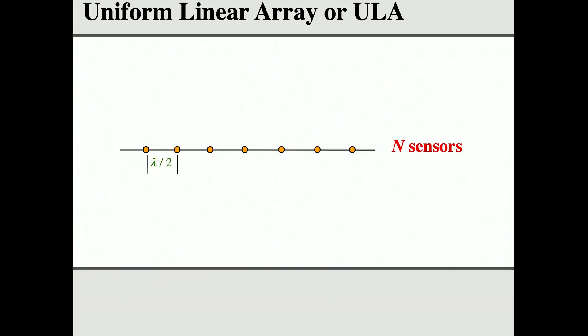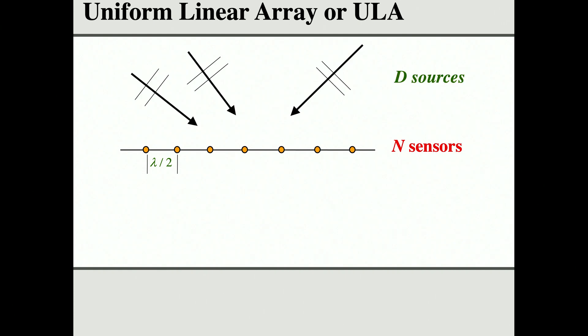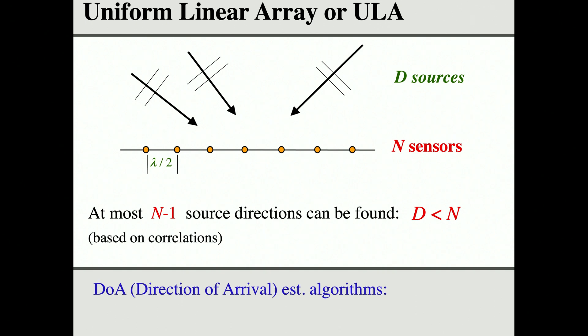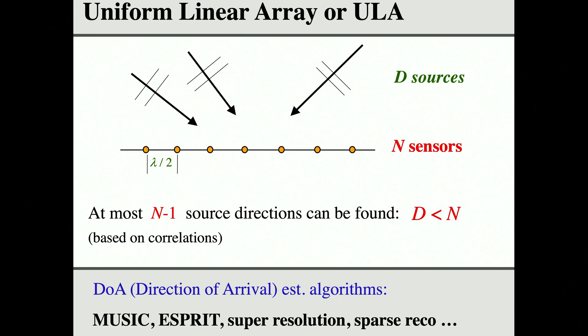Today we are surrounded by sensors — devices that sense signals. Here is a so-called array of sensors. This array receives signals from various places — one could be from your aunt coming from New York, one from somebody else somewhere else. It is known that an array can detect at most N minus one different source directions at one time — this is the so-called uniform linear array. This is called the direction of arrival estimation problem, and MUSIC happens to be one of the most famous algorithms for doing this.